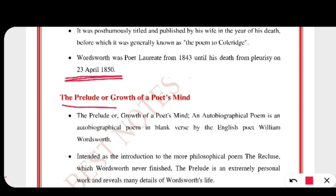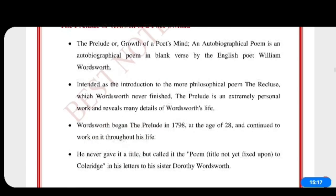The Prelude, or Growth of a Poet's Mind — this title is given because the poetry itself kept on growing, and he is talking about a child in the poetry who is also growing. Whenever he remembered something special worth mentioning, he included and upgraded his poetry. That is why it took a lifetime to publish the book, and that was also done by his wife.